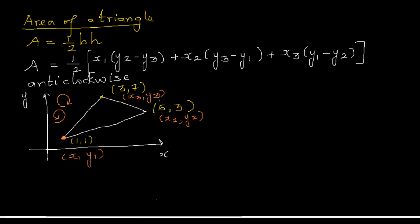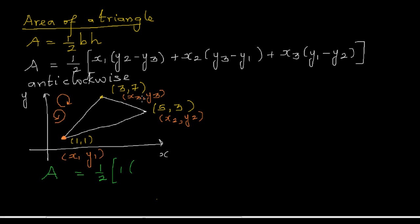Let me substitute the values into the formula. Area equals half times: x1 is 1, times (y2 minus y3) which is (3 minus 7); plus x2 which is 5, times (y3 minus y1) which is (7 minus 1); plus x3 which is 3, times (y1 minus y2) which is (1 minus 3).